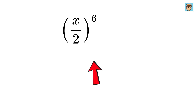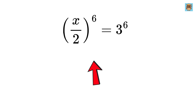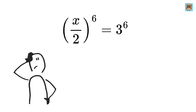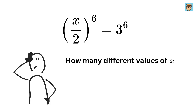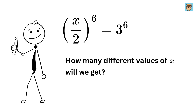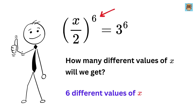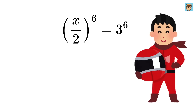We are given the equation x divided by 2, raised to the power 6, equals 3 raised to the power 6. Just by looking at this equation, tell me how many different values or roots of x will we get. Yes, you are right — we will get not 1, not 2, not 3, but 6 different values of x because of this 6 in the exponent.